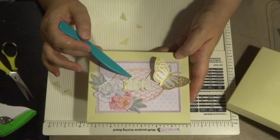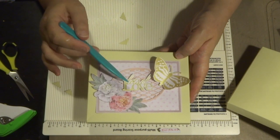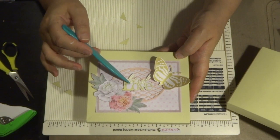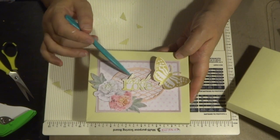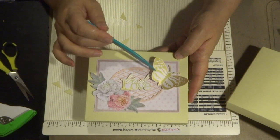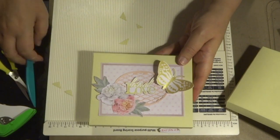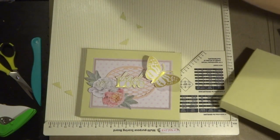I also did a die cut of the background and also did a cut foil and embossed sentiment and a beautiful butterfly from the actual collection as well. So that's my envelope that I created for my two cards.